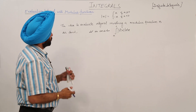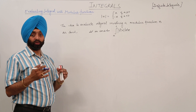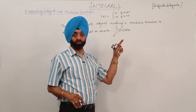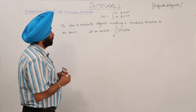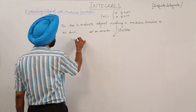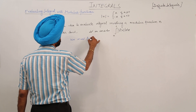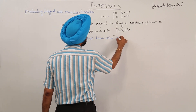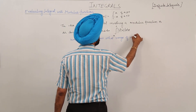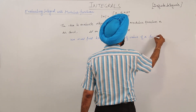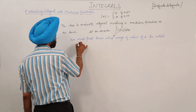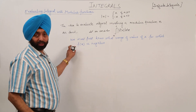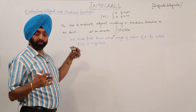Now, the most important thing we must first know is: what range of values of x makes f(x) negative? For which values of x is f(x) negative? This is the most important thing — this is the theoretical part, and when we go through examples you will love doing these modulus-type questions.